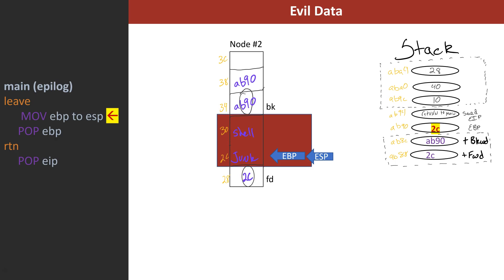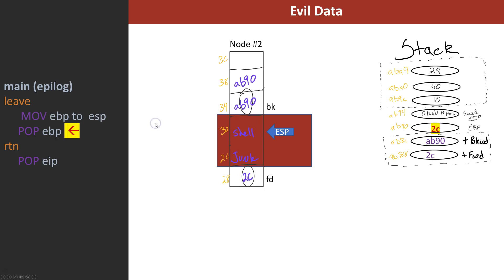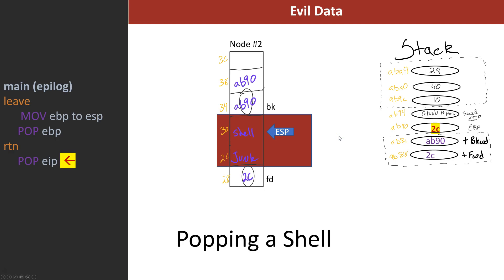So the stack is now on the heap and we control it. With the next statement, when we do a pop EBP, we don't know where EBP went - it just goes off to wherever junk points, but it doesn't matter. Then we do the next statement - a pop EIP - and that's our shell value. It starts running that function, we get a shell, and that's it.